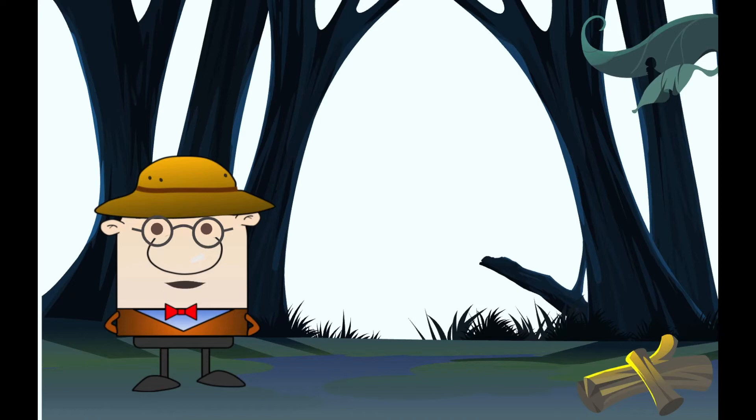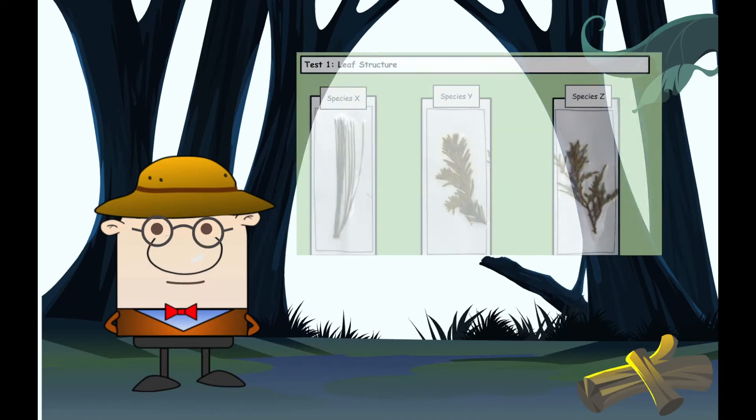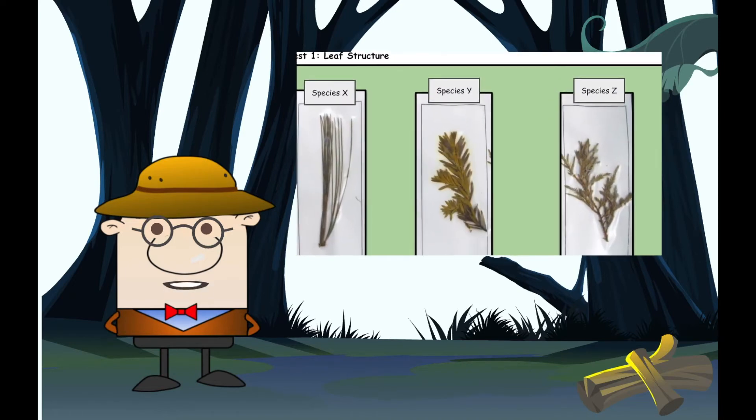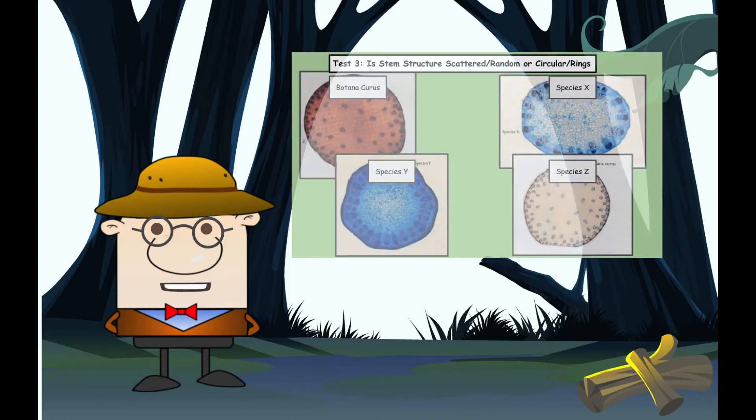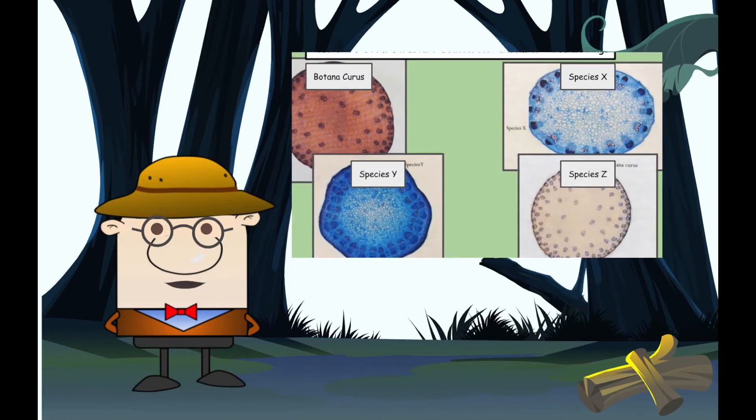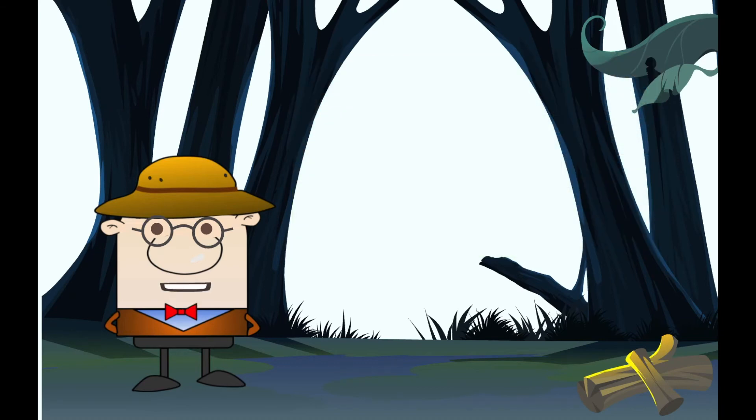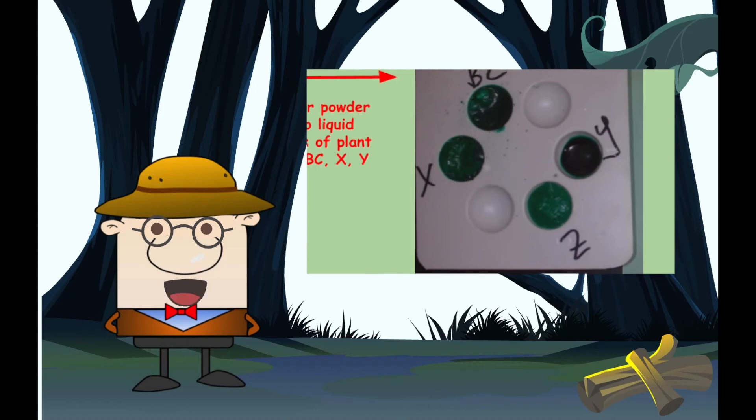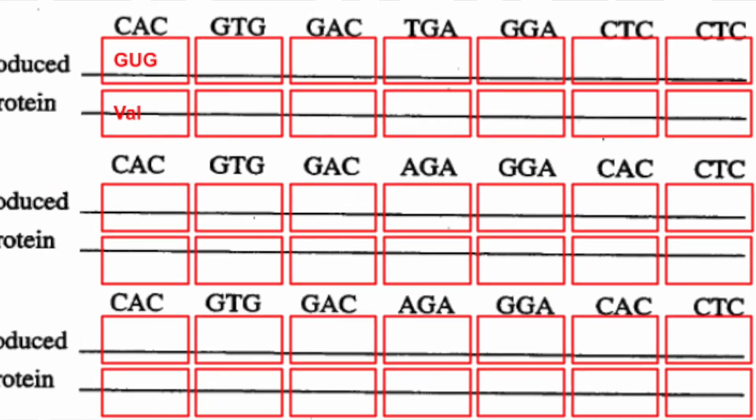First, you need to compare the physical characteristics of each plant and compare them to BC. Then, you will need to compare the chemical characteristics such as protein and DNA.